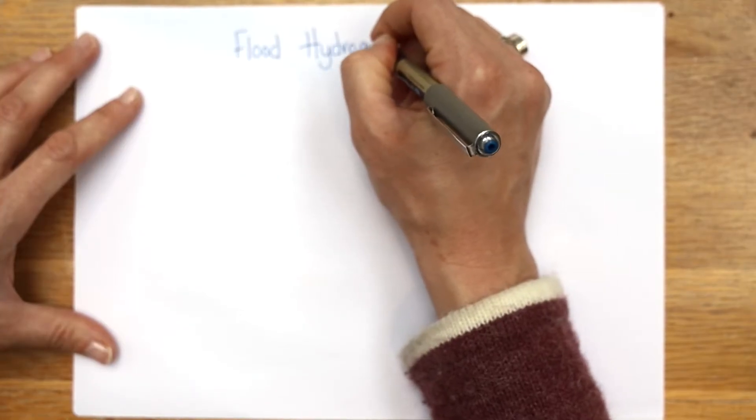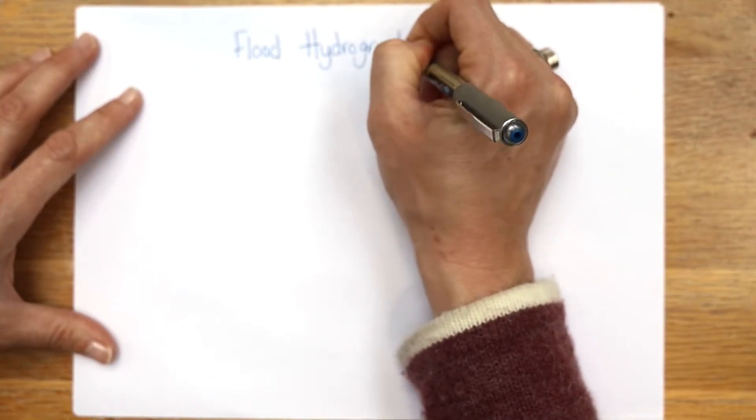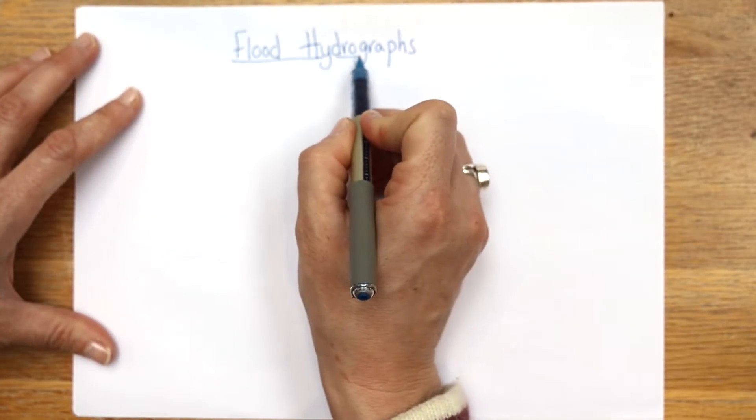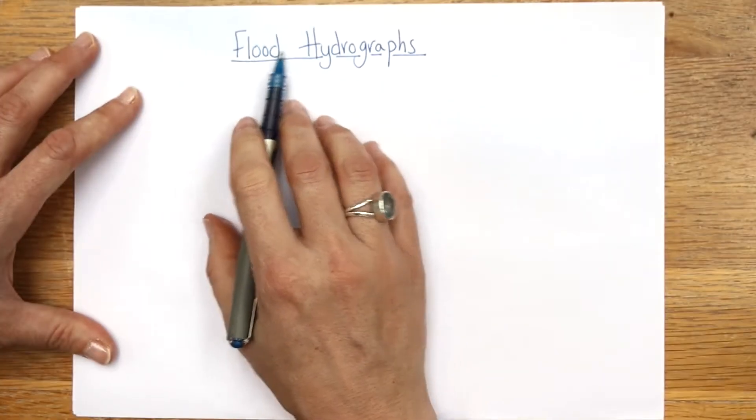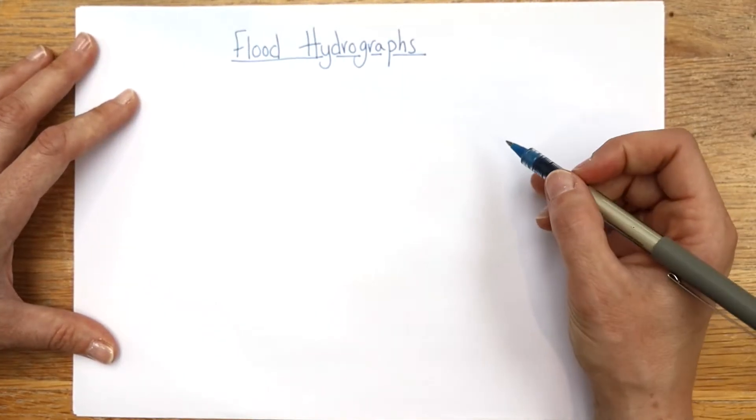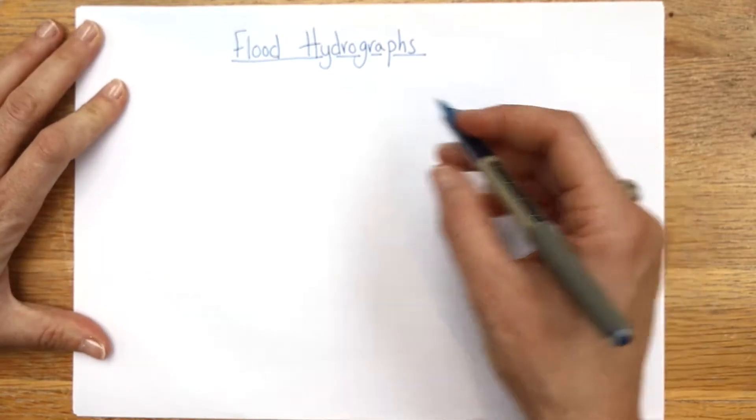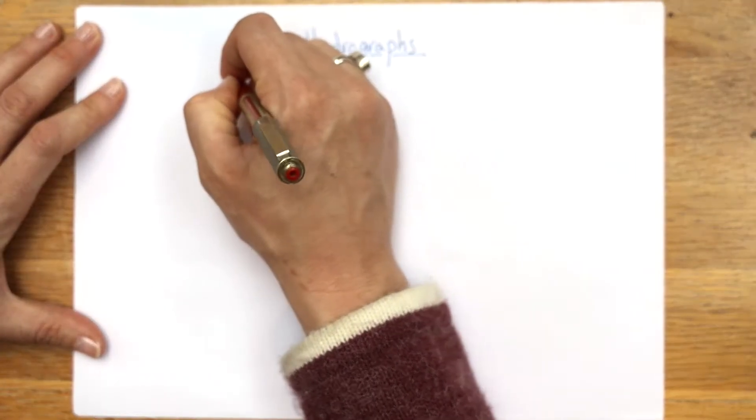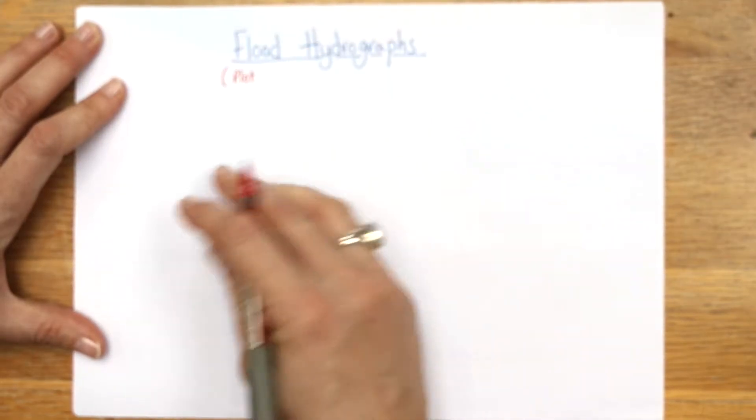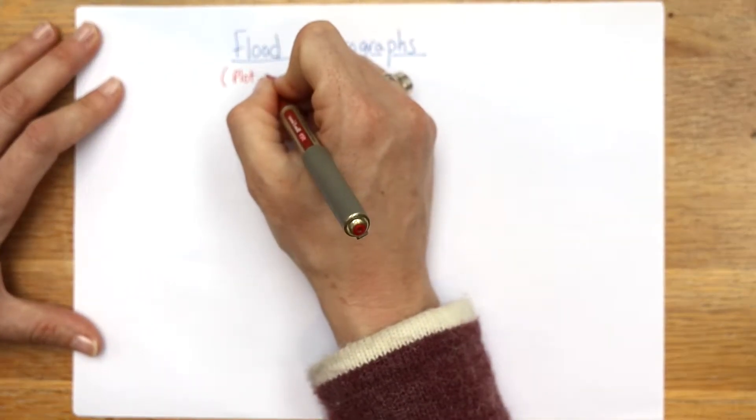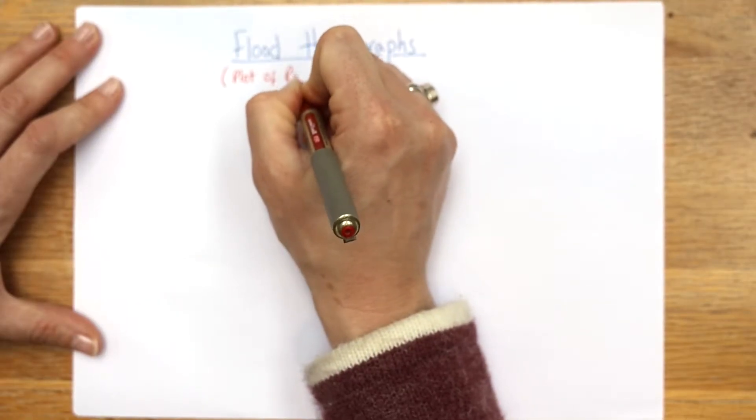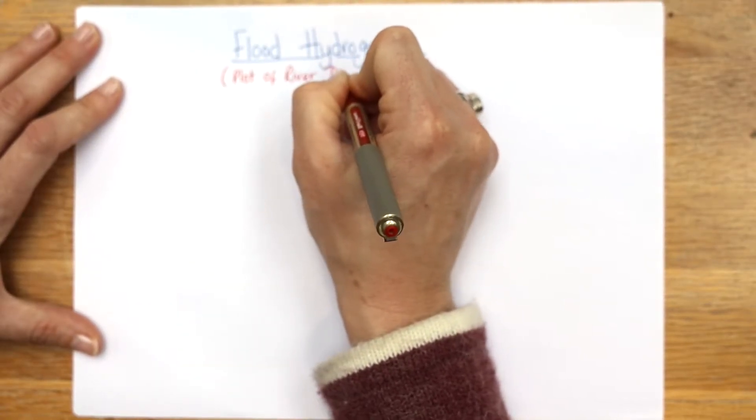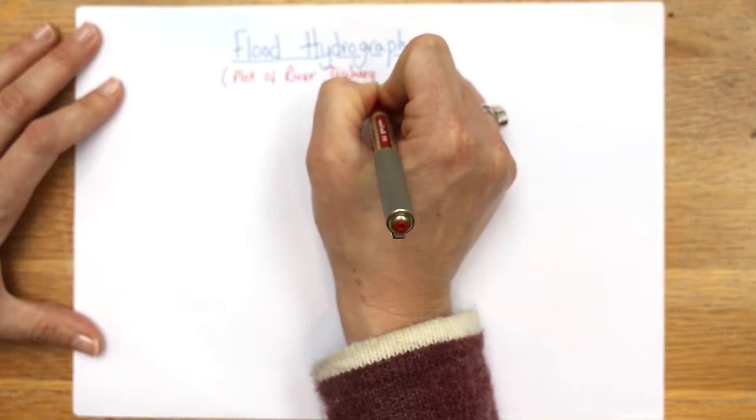It also has quite a long name which I know can sometimes put people off, but remember hydro just means water, so it's flood watergraphs if you like. What they do - and I'm going to put this in red because it's really important - is they plot on a graph, it is a plot of river discharge after a storm.